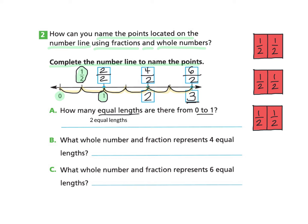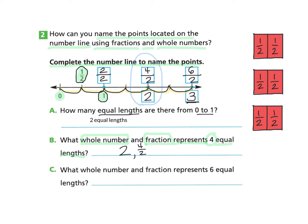Now let's look at Part B: what whole number and fraction represent four equal lengths? When we look at our number line, four equal lengths is the same as four over two, and the whole number is two. So the whole number would be two and the fraction would be four over two. Now let's look at Part C: what whole number and fraction represent six equal lengths? Six equal lengths is the same as six over two, or three whole numbers. So the whole number would be three and the fraction would be six over two.